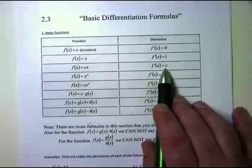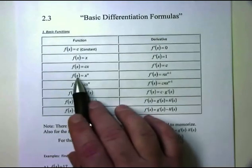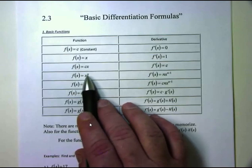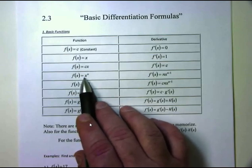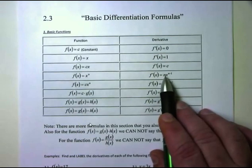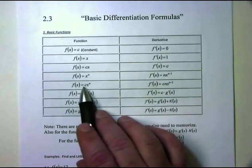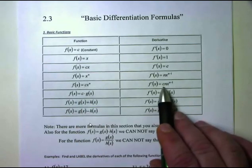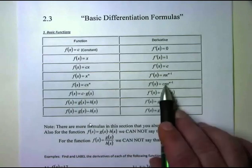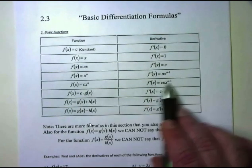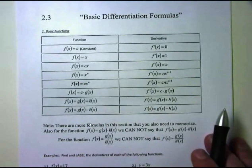Now we get into major formulas. If f(x) equals x to the n, this is called the power rule. To take the derivative of x to the n, you bring the exponent out front, keep x, and then subtract one from the exponent. So the derivative is n times x to the n minus one. If you have a constant times x to the n, the constant holds over — you leave the constant and take the derivative of the x part, giving you cn times x to the n minus one. This works for all exponents.